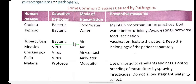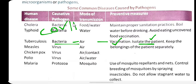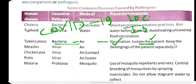Tuberculosis (TB) is also caused by bacteria. Preventive measures include vaccination, and isolating the patient — just as in COVID-19 where lockdown keeps people apart, TB patients should be isolated to prevent the bacteria from spreading through air.